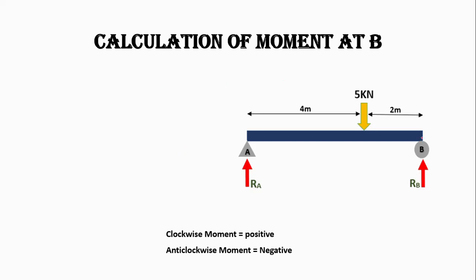Similarly, we can calculate the moment at B. If we consider the moment at B, this point load will bend the beam in the anti-clockwise direction, and this support will resist the moment in the clockwise direction.